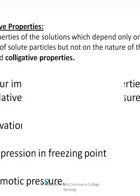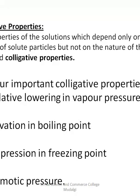So just a quick glance before I go to the next type of colligative property. Colligative properties are the properties of the solution which depend only on the number of solute particles, but not on the nature of solute particles. There are four colligative properties: relative lowering of vapor pressure, elevation in boiling point, depression in freezing point, and osmotic pressure. The first type — relative lowering of vapor pressure — is given by the symbol (P⁰ − P) / P⁰, where P⁰ is the vapor pressure of the pure solvent and P is the vapor pressure of the solution.